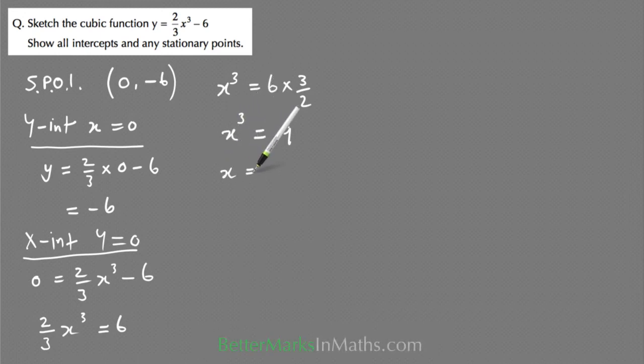So x is equal to the cube root of 9. Another way of writing that is 9 to the power one third, and on the calculator that's approximately equal to 2.0801 to 4 decimal places.